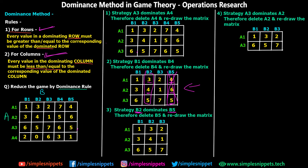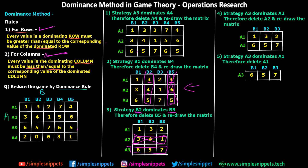In step number four, A3 dominates A2. All the values in row A3 are greater than all the values in A2: 6 > 3, 5 > 4, and 7 > 1. So we can completely exclude A2 and redraw the matrix.